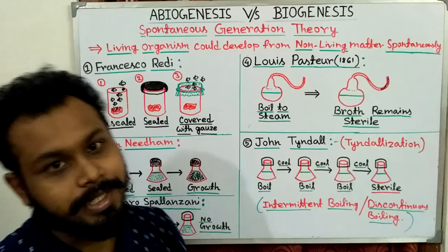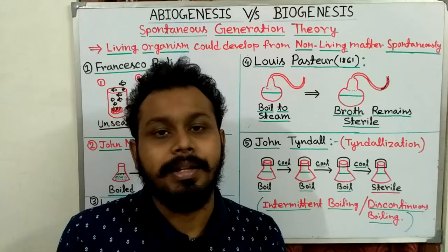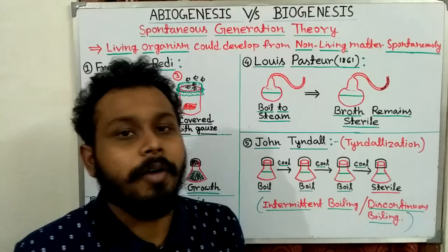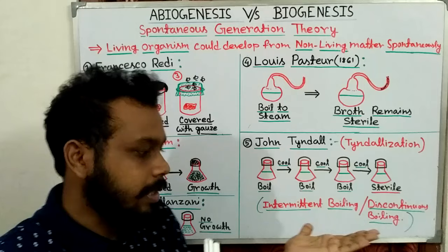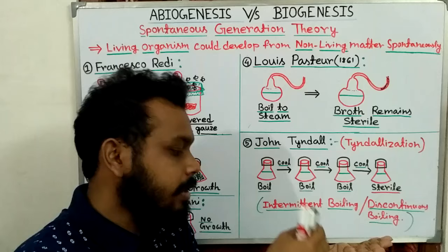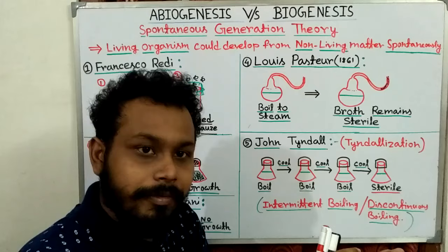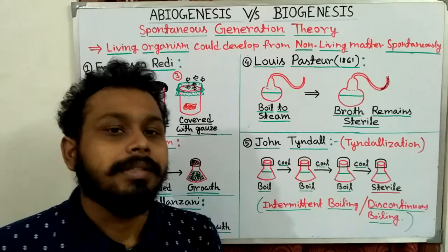Today we are going to discuss the theory of spontaneous generation — abiogenesis — and biogenesis, and the difference between them. In ancient times, people used to believe that living organisms could be developed from non-living matter spontaneously. For example, from a piece of meat, eggs of flies could be generated, from which maggots develop, and from maggots, flies would be produced. This is the main principle of spontaneous generation.